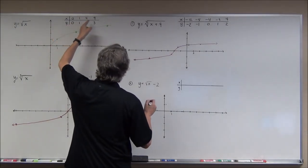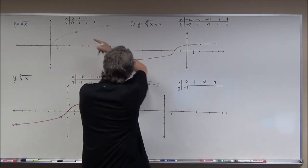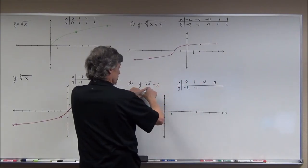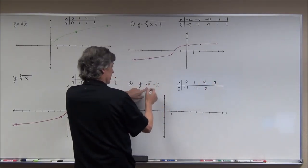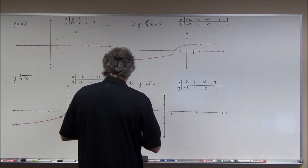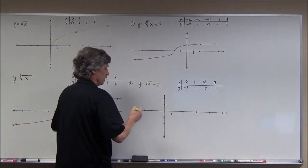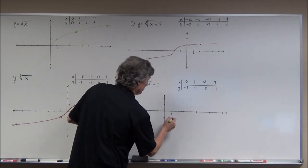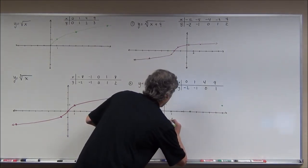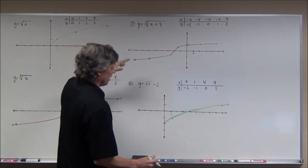Using the same x-values: 0, 1, 4, and 9. Square root of 0 minus 2 is negative 2; square root of 1 minus 2 is negative 1; square root of 4 is 2 minus 2 is 0; square root of 9 is 3 minus 2 is 1. So my graph looks like the parent square root function but dropped down 2 units — that's a vertical translation, a shift of 2 units downward.